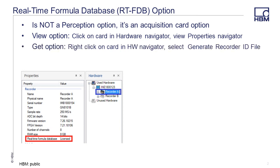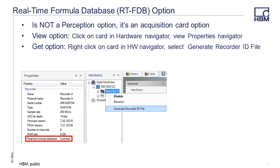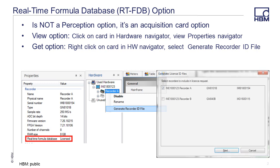To obtain the option, you'll first need to right-click on the card in the Hardware Navigator and select Generate Recorder ID File. Then select the card to be licensed. You'll need to email the file to support@usa.hbm.com so the process can begin to provide you with a license file.